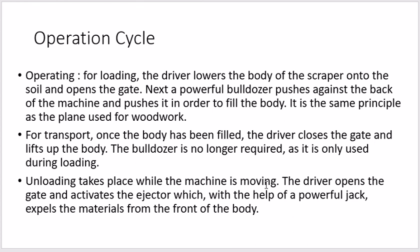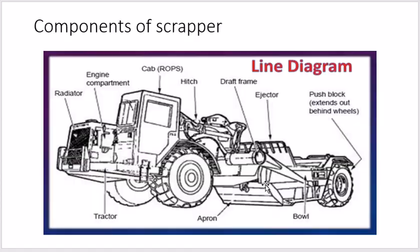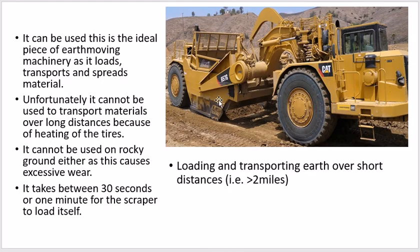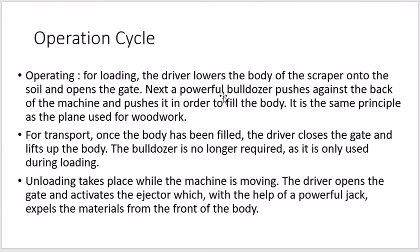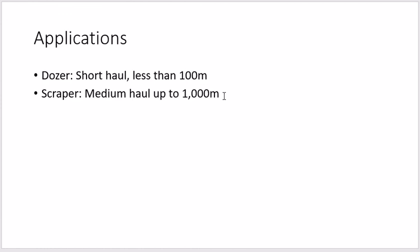The driver opens the gate and activates the ejector, which with the help of a powerful jack lifts up the body so the material already filled inside can be taken out. The unloading takes place while the machine is moving — the driver opens the gate and activates the ejector, which with a powerful jack expels the material from the front of the body.